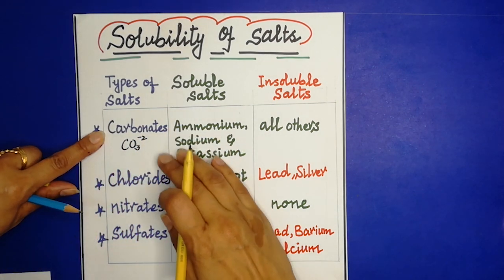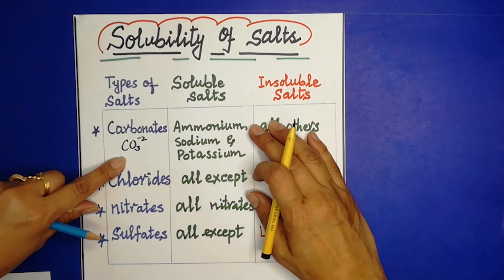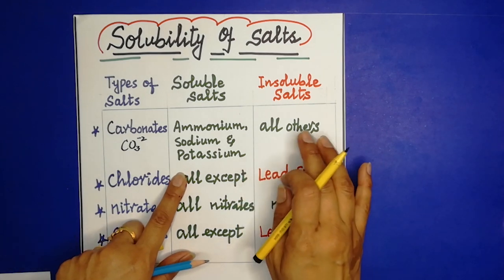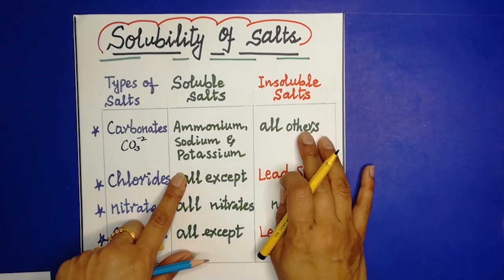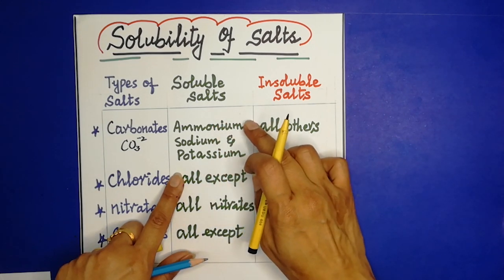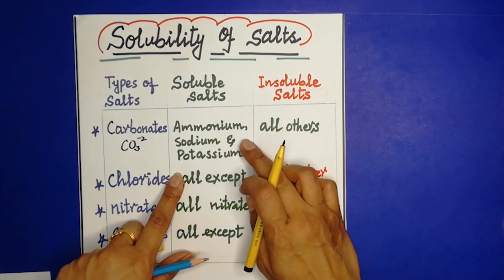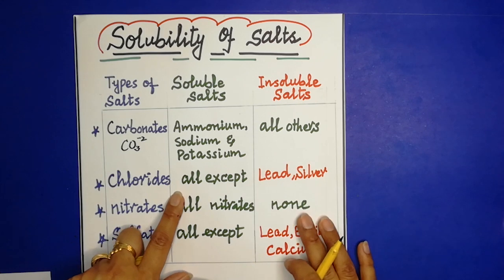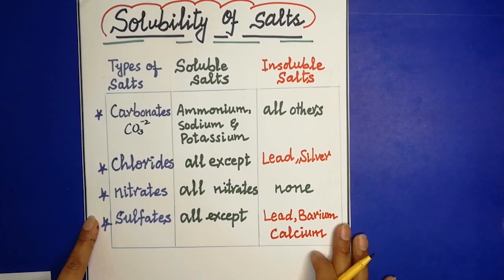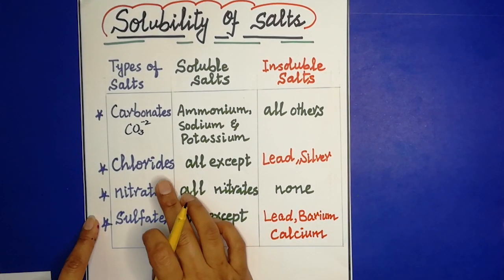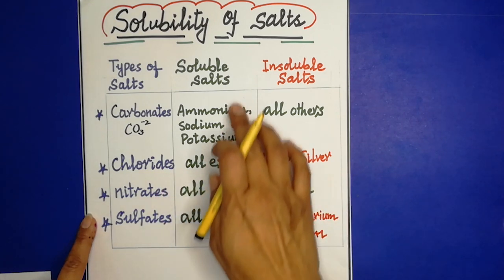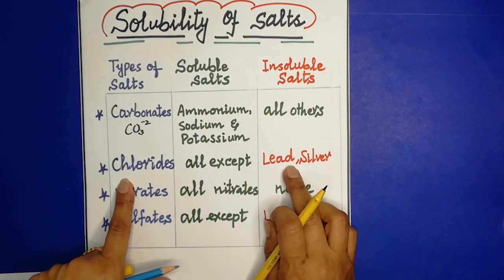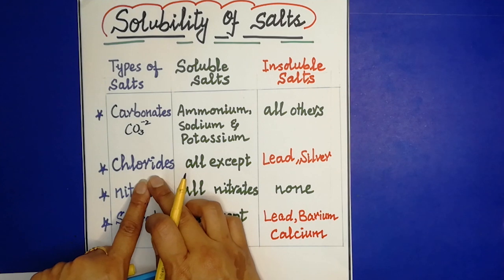all carbonate salts are insoluble except ammonium carbonate, sodium carbonate, and potassium carbonate — these three are soluble. All other carbonates are insoluble. For chlorides: all chlorides are soluble,